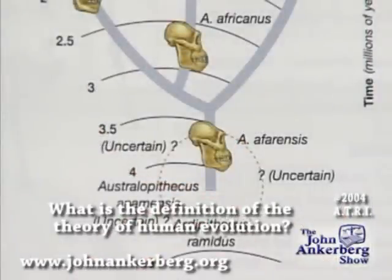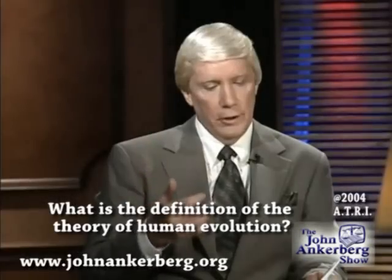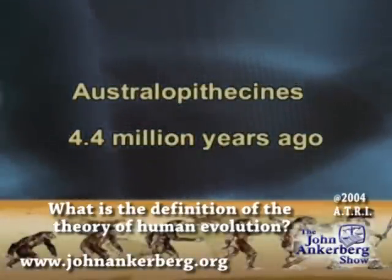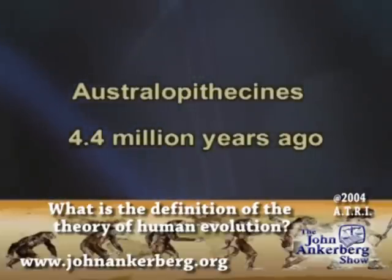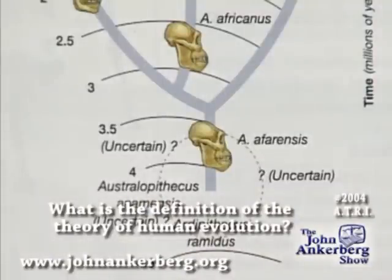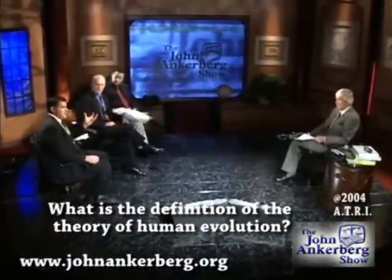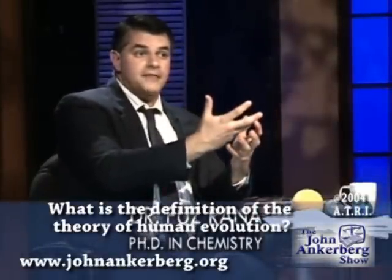Nobody knows which of the australopithecines species could have given rise to the homo hominids — the homo bipedal primates. They're saying the australopithecines started the ball game off at about 4.4 million years ago. The first true australopithecines go back 4.5 million years ago. Prior to that, there are a handful of forms recently discovered in the fossil record that predate the australopithecines, going back to around 6 to 7 million years. These all seem to have the ability to walk erect, which is curious, because as soon as these hominids appear, you see that ability showing up immediately.